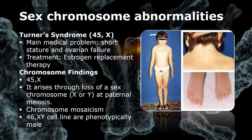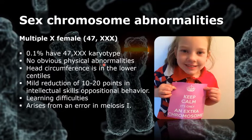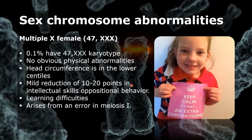Next we have multiple X females, or 47 XXX. Approximately 0.1 percent of all females have a 47 XXX karyotype. These women usually have no obvious physical abnormalities, though head circumference is in the lower centiles. There can be a mild reduction of between 10 and 20 points in intellectual skills and sometimes oppositional behavior.